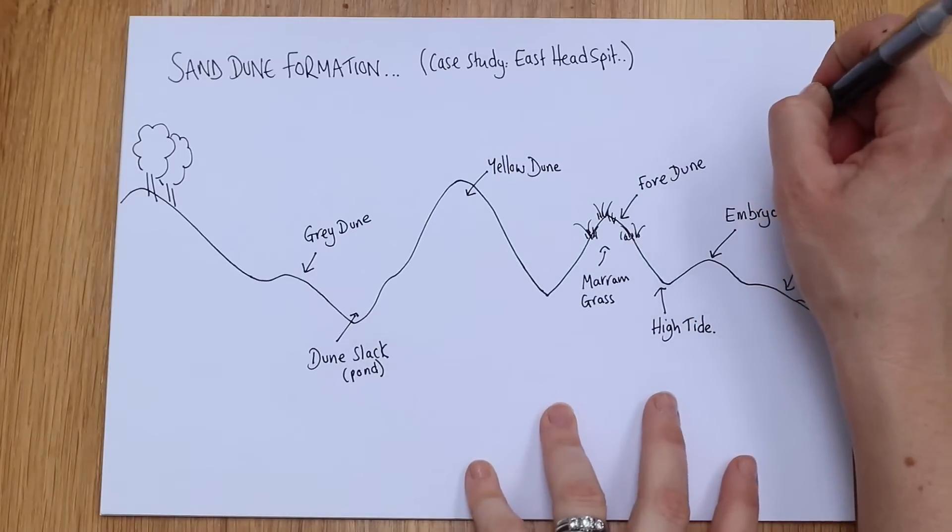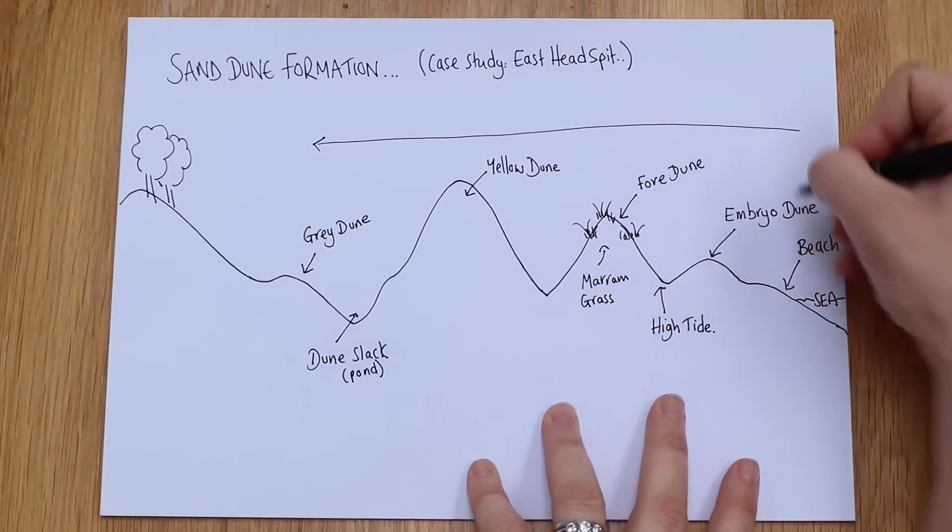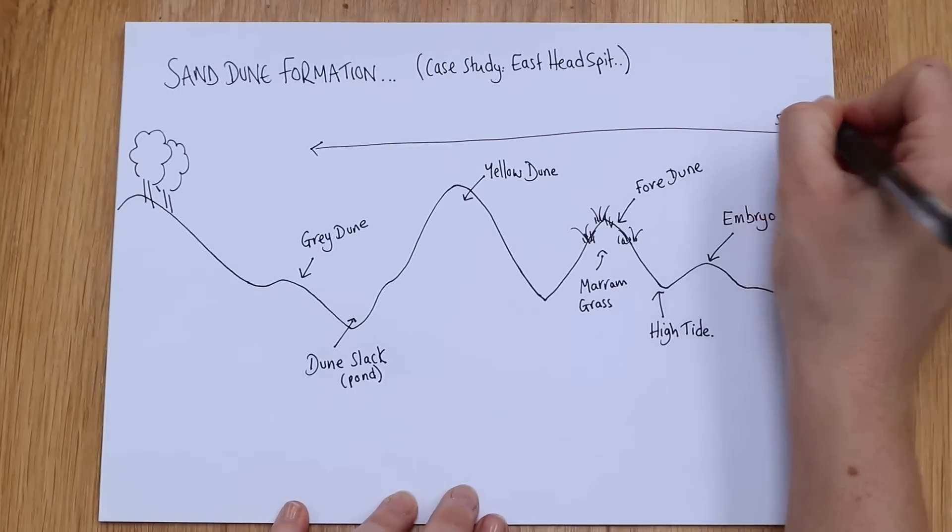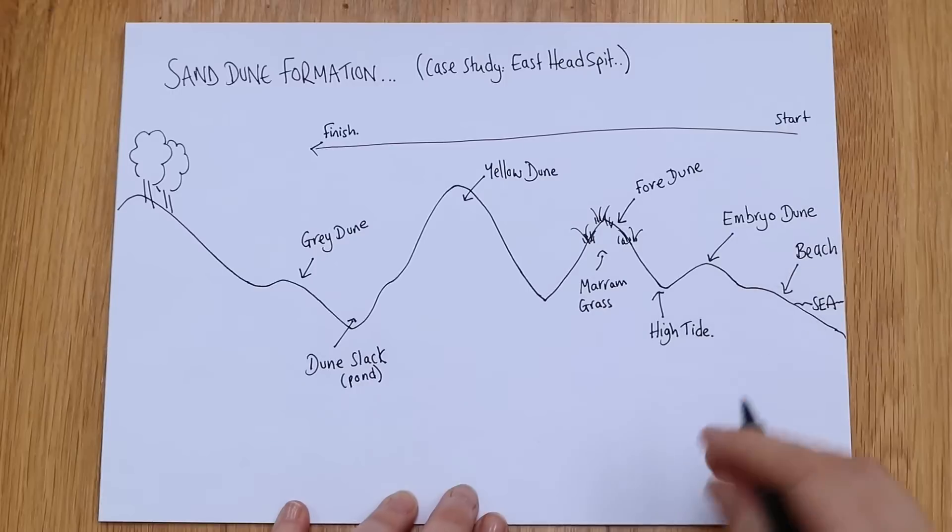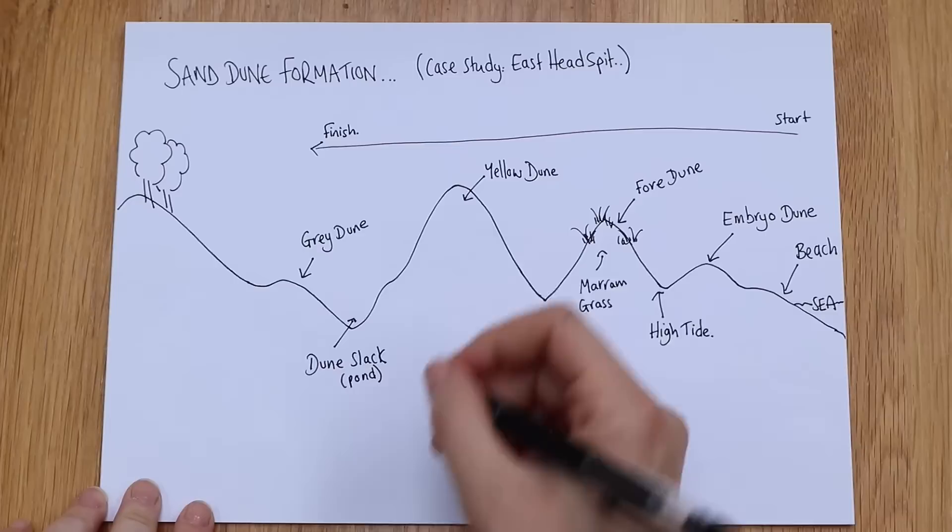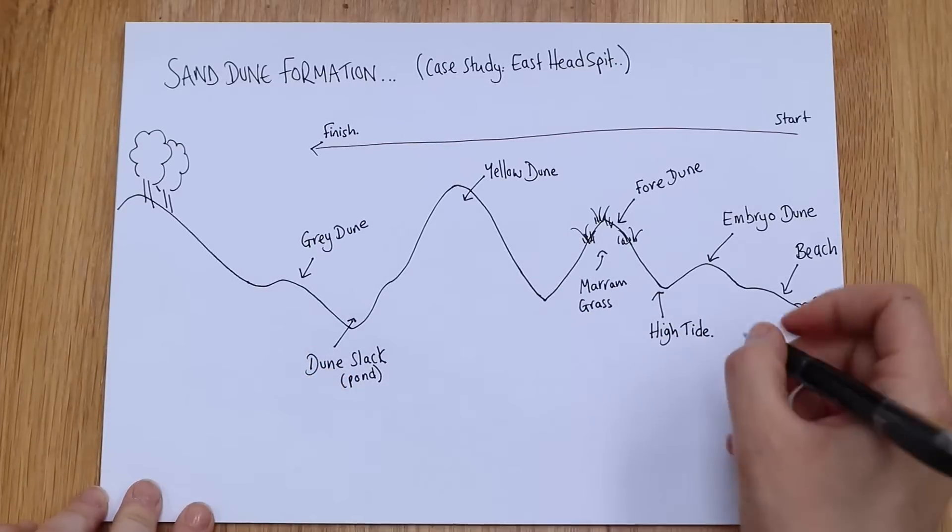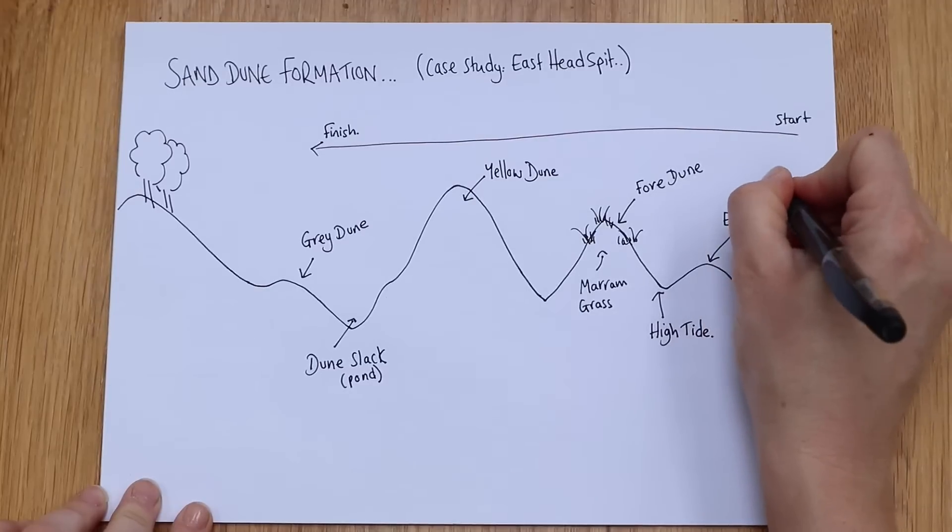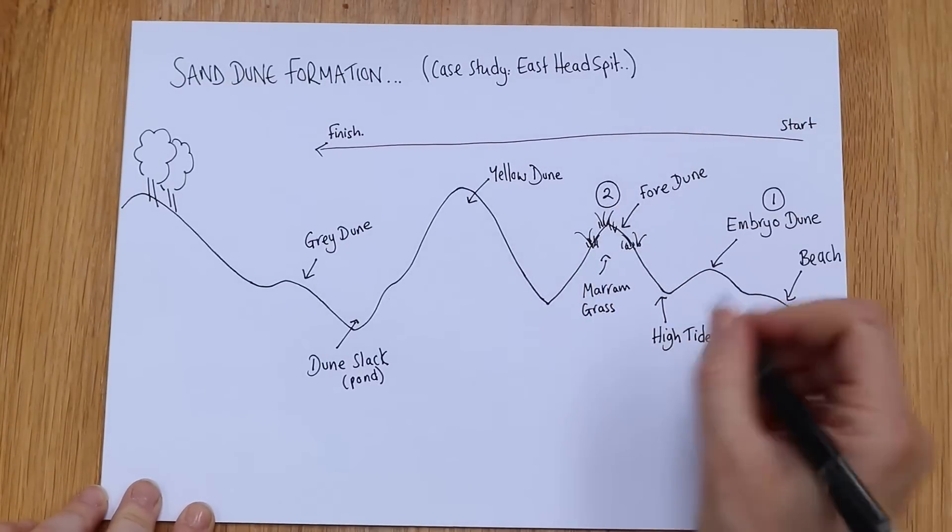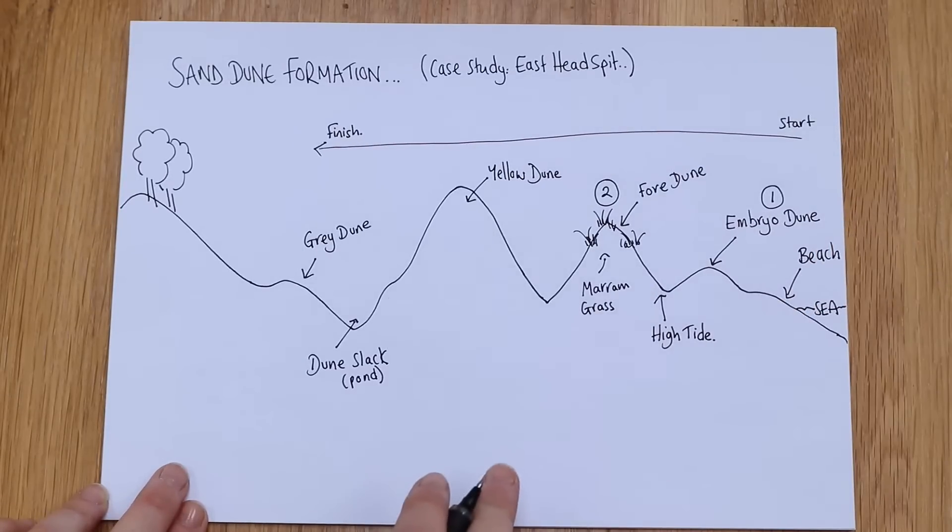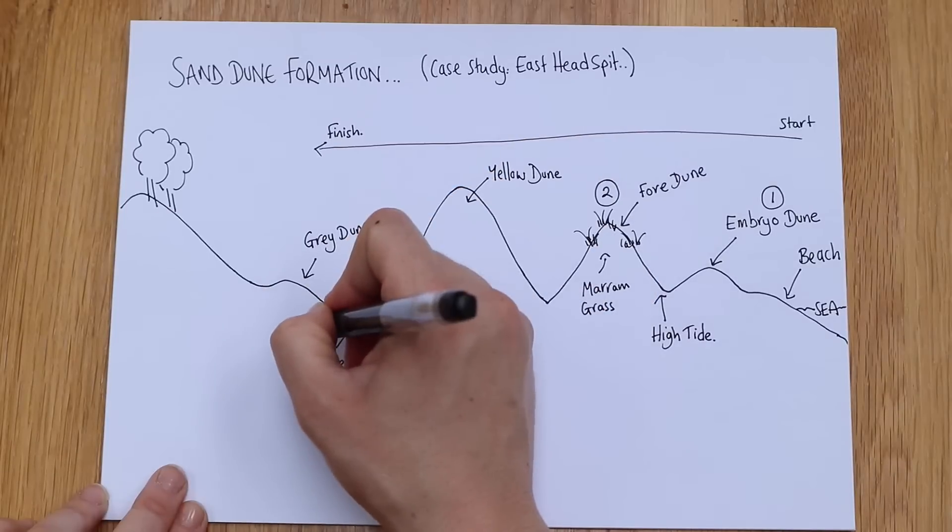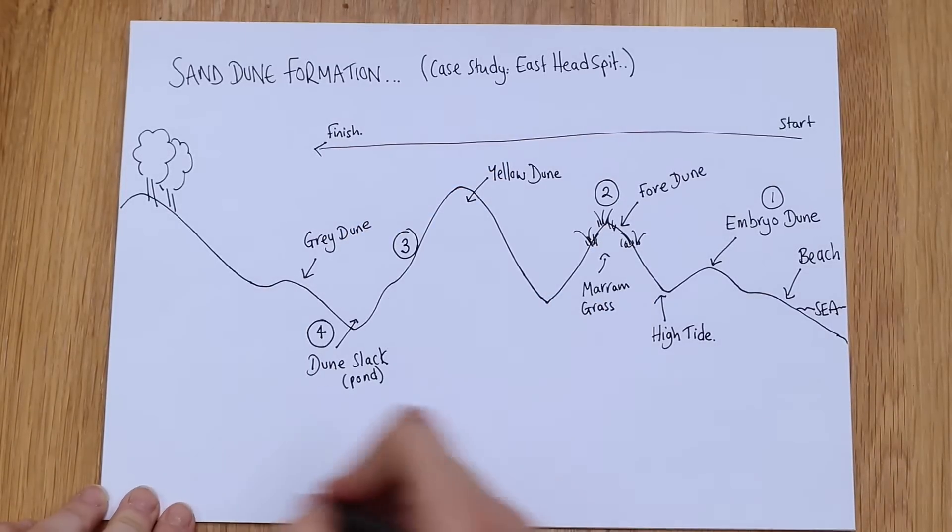So there you've got the stages. Now I'm going to draw an arrow going backwards because they don't form forwards towards the sea, they do actually form backwards. So this would be the start and this is the finish. Now there are four stages that you would need to mention. You wouldn't be expected to draw this and you'd likely be given a photograph or something to help you. But we'll go through the four stages together. So I'm actually going to draw it backwards. So embryo dune is stage one, the marram grass section and the fore dune is stage two.